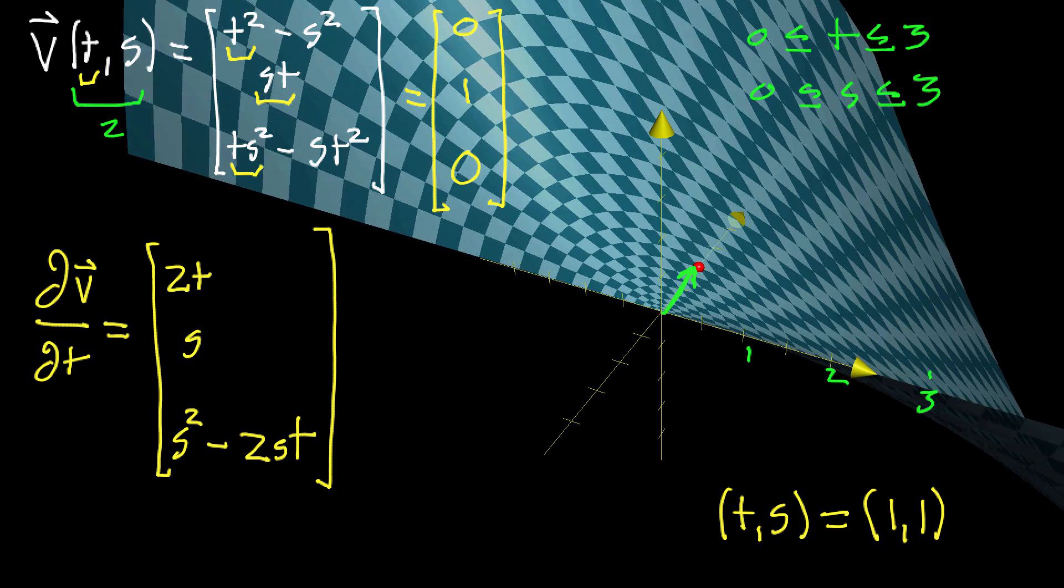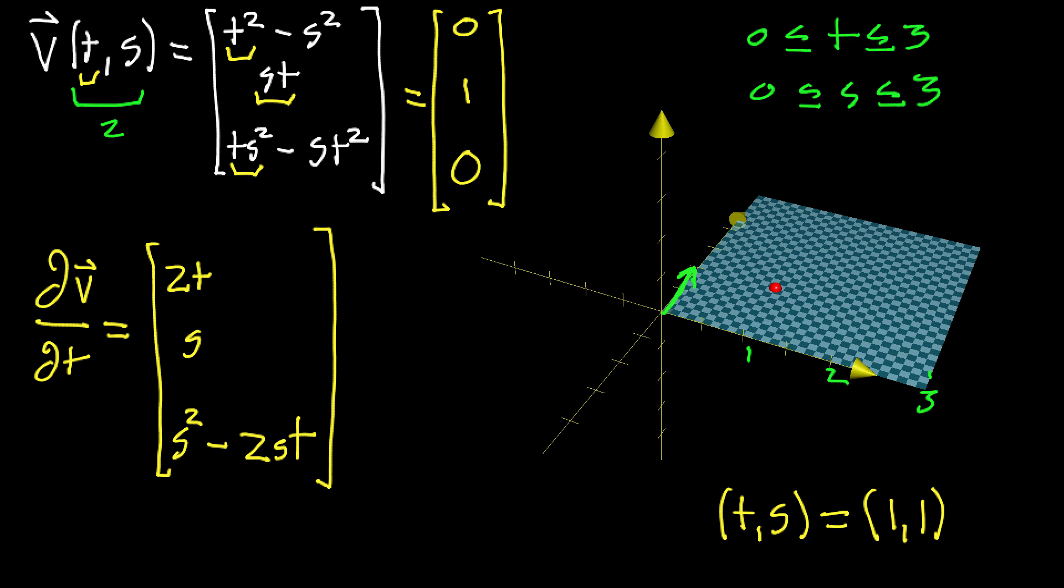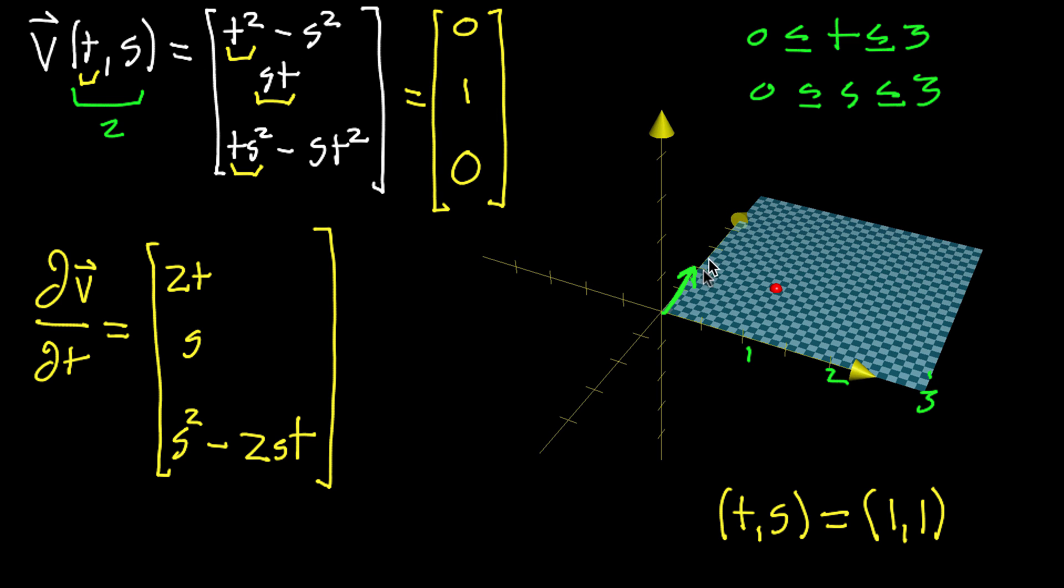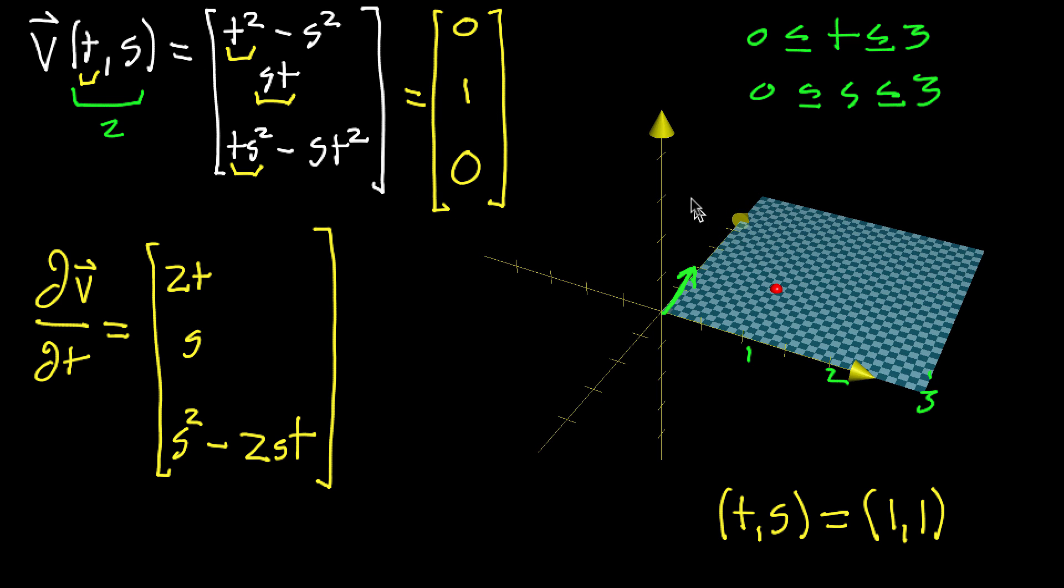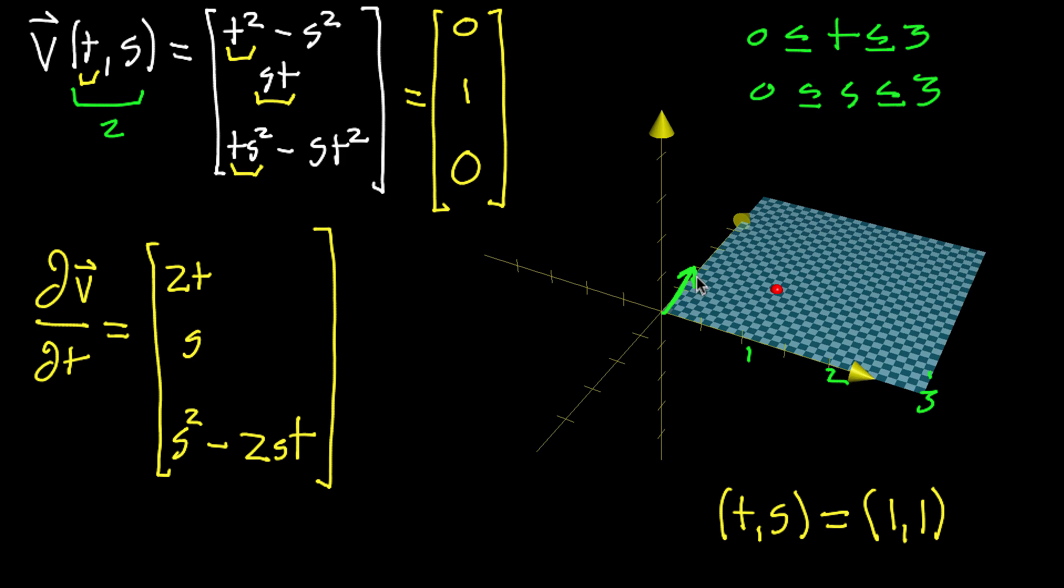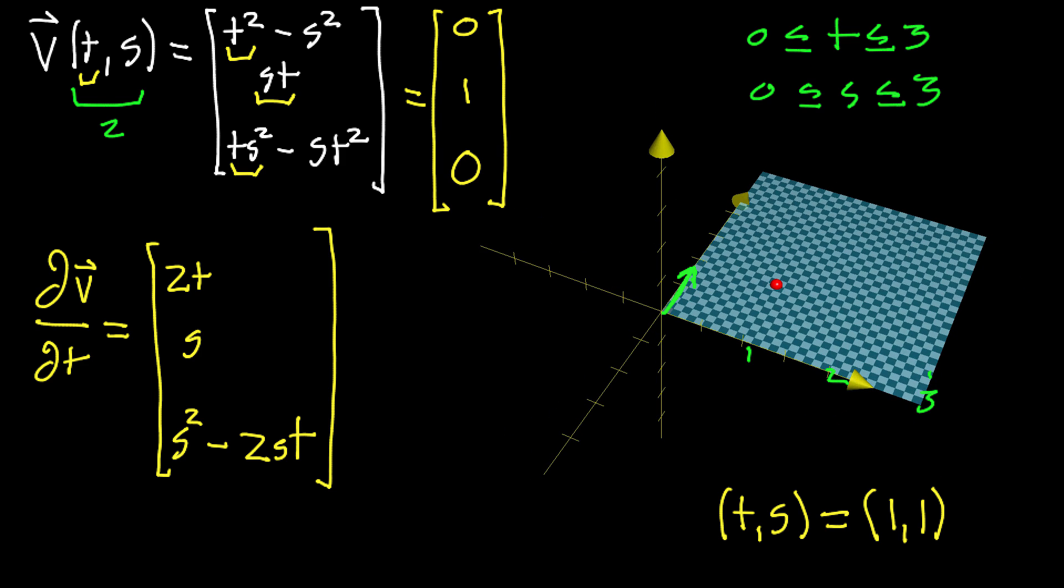And in principle, you could do that for every single point. If any given input point, you plug it through the function and you draw the vector in three-dimensional space. As you watch this animation, it'll land at the tip of that vector.